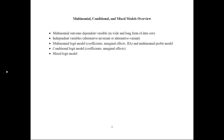As an overview, I will first go over the multinomial outcome dependent variable and how this variable is defined when we have multiple choices. Then I will talk about the wide and long forms of datasets. Then I will talk about the independent variables and how they can be either alternative invariant or alternative variant. Then I will talk about the multinomial logit model — how it's defined, the coefficients, marginal effects, and IIA — and the multinomial probit model. Then I will talk about the conditional logit model, including the coefficients and marginal effects, and conclude with the mixed logit model.